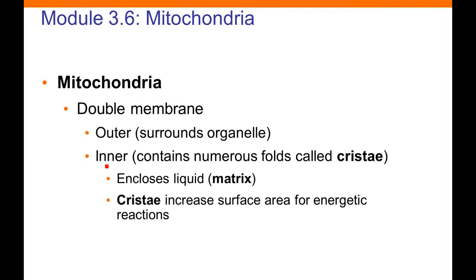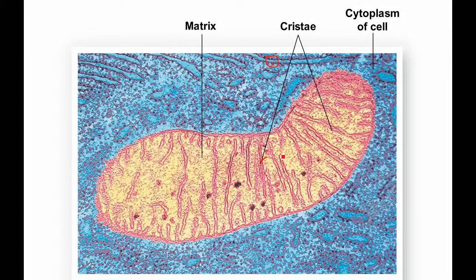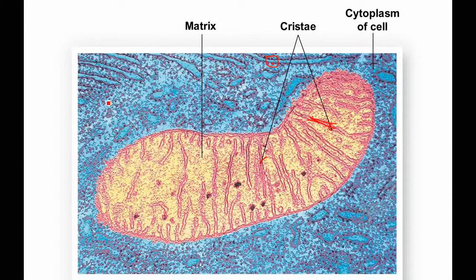The next few slides discuss the structure of the mitochondrion in more detail. The characteristic folds inside the mitochondria are called cristae, and that's where the enzymes are found. Here is a beautiful electron micrograph — false color added to highlight the mitochondrion in red and yellow, with other parts of the cell including likely endoplasmic reticulum with attached ribosomes outside. You can see the cristae — the double membranes where the enzymes that carry out cellular respiration are located.